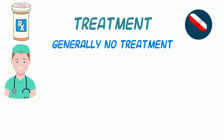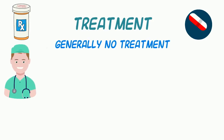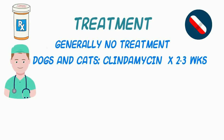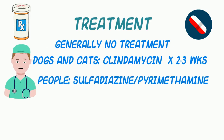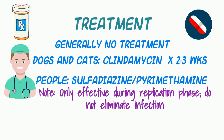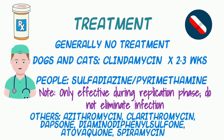Generally, animals are not treated for toxo, but in dogs and cats, clindamycin for two to three weeks is the drug of choice. For human patients, a common recommendation is sulfadiazine and pyrimethamine. However, these drugs are active during parasite replication and do not eliminate the infection. Difficult cases might also be managed with azithromycin, clarithromycin, dapsone, diaminodiphenyl sulfone, atovaquone, or spiramycin.